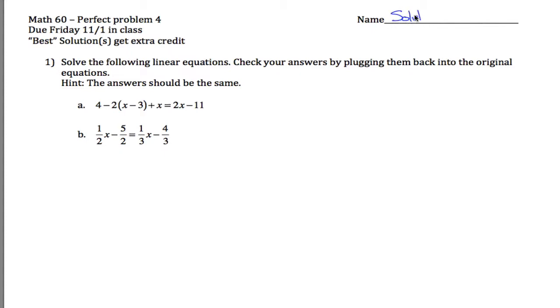Okay, here are solutions to perfect problem 4 for math 60. We're given two different linear equations here that we're asked to solve. So the first one, 4 minus 2 times x minus 3 plus x equals 2x minus 11.